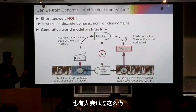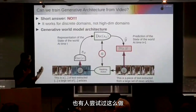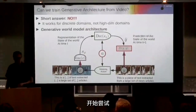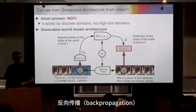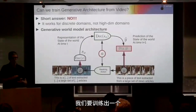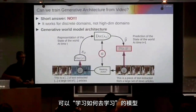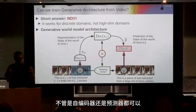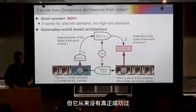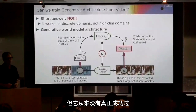People have tried. This was basically at some point when Jeff Hinton started playing with backprop. The big idea was that we're going to be able to train multilayer nets to learn representations, either as autoencoders or predictors. It never really worked.